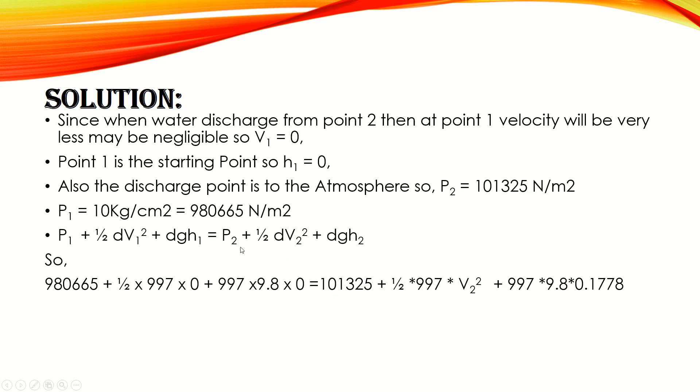P2 is the pressure at point two, which will be equal to atmospheric pressure, plus half multiplied by density, times V2 squared, which is the required parameter, plus density multiplied by gravitational energy multiplied by height. Since the distance from point two to point one is 0.1778 meters, as we have shown in our previous slide.